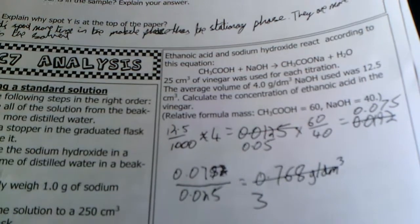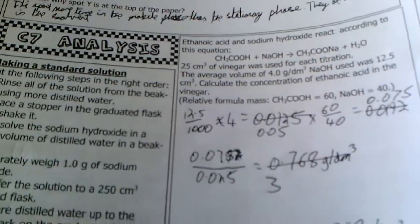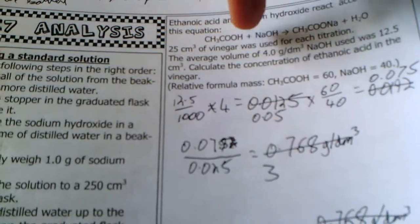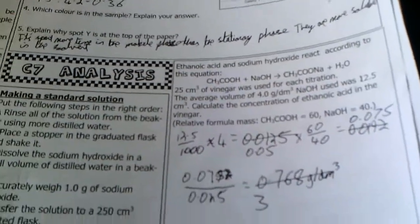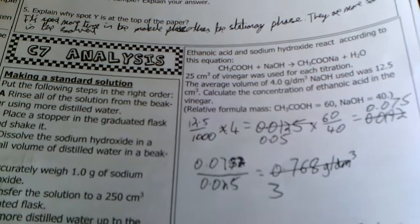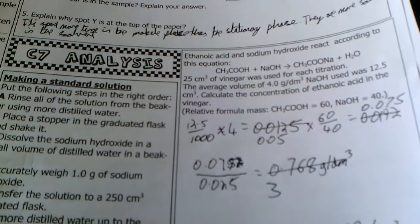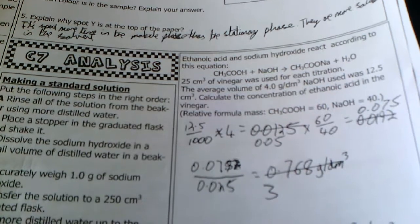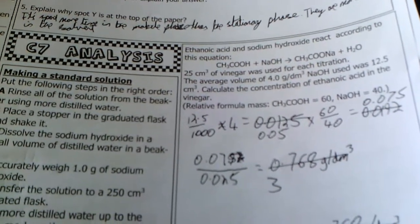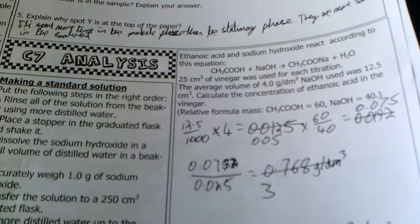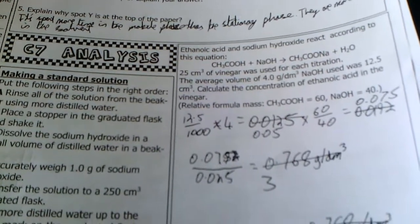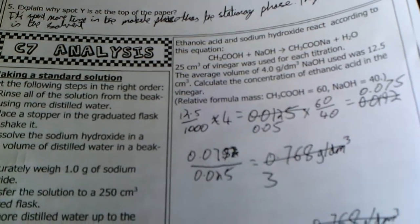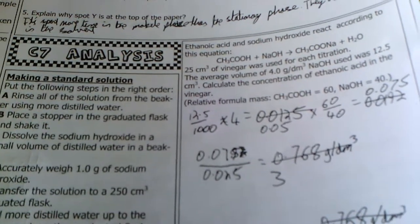Ethanoic acid and sodium hydroxide react according to this equation. Always be on the lookout for large numbers before the main chemical, because that may trip you up — you'll have to double or quadruple your relative formula mass. 25 cm³ of vinegar was used for each titration. The average volume of 4 g/dm³ sodium hydroxide used was 12.5 cm³. Calculate the concentration of ethanoic acid in the vinegar. First: what are we looking for? The concentration of ethanoic acid. We don't know the mass of ethanoic acid, so we need to find that out first.